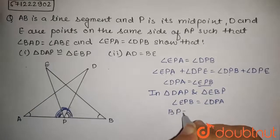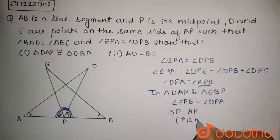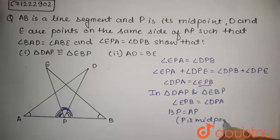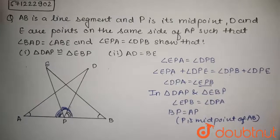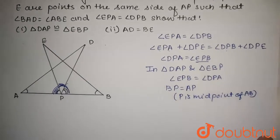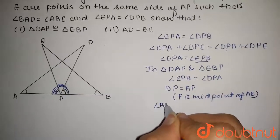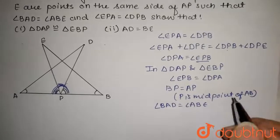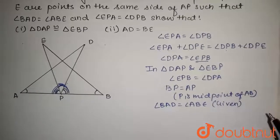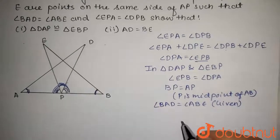And, BP is equal to AP as P is midpoint of AB. So, these two are equal. And, angle BAD is equal to angle ABE. This is given in the question. That is, this angle is equal to this angle.